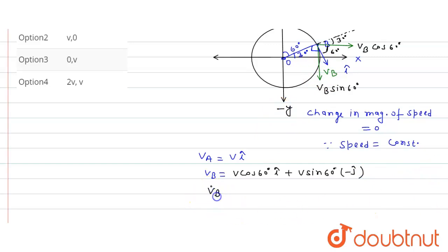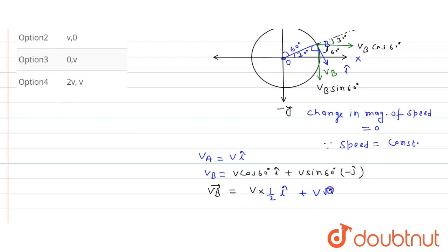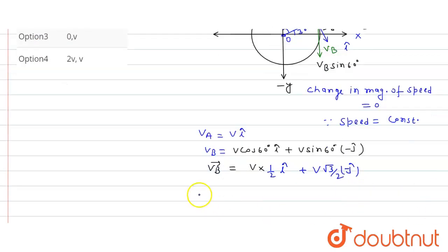So v_B vector equals v·cos60° î − v·sin60° ĵ. We know cos60° = 1/2 and sin60° = √3/2. So this becomes v·(1/2) î − v·(√3/2) ĵ, which gives v_B = (v/2) î − (√3v/2) ĵ.